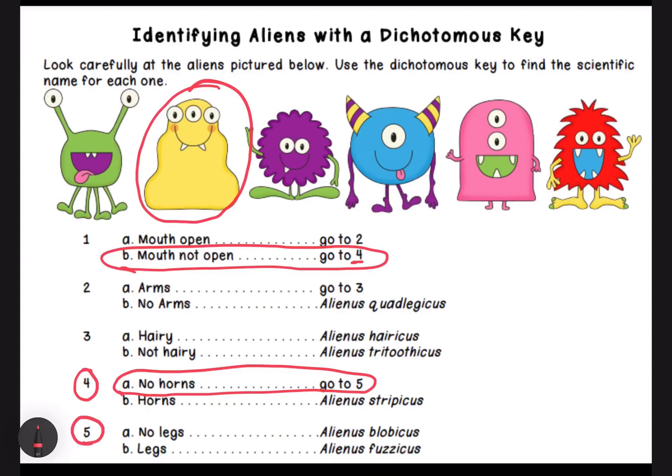Here's step number five: does this monster have legs? Yes or no? If this monster does not have legs, its name is going to be Alienus Bloblichus. If the monster has legs, it's going to be Alienus Fuzicus. What do you think — does this monster have legs or not? You're going to select the name: is it Alienus Bloblichus or Alienus Fuzicus?